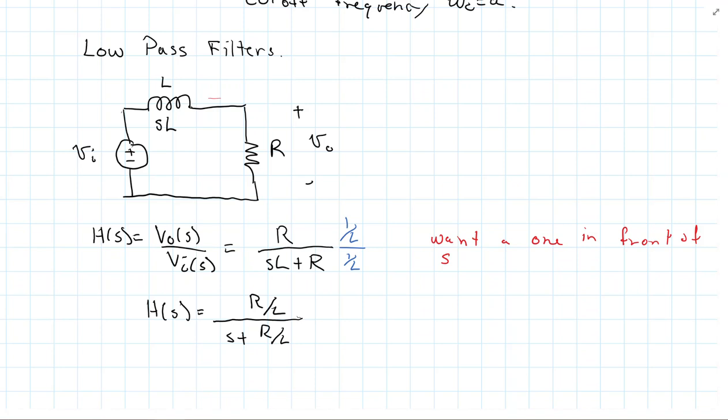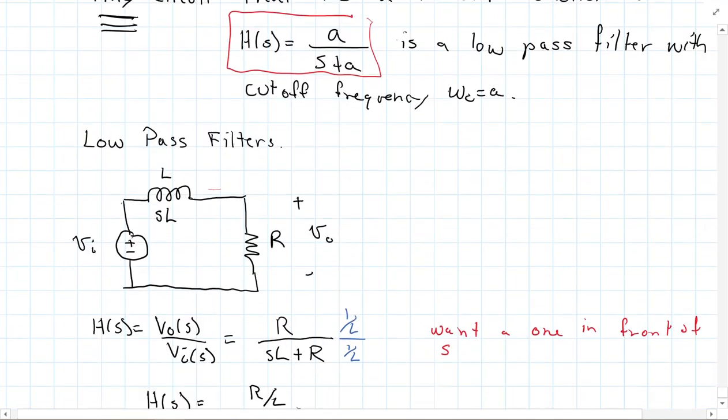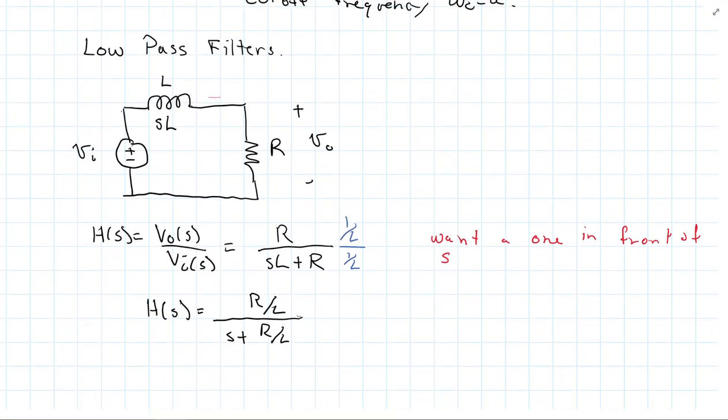But wait a minute, what did we say in the previous lesson here? Any transfer function that's in this form is a low-pass filter. So this is in the form, H(s) is equal to A over S plus A. So it is a low-pass filter.